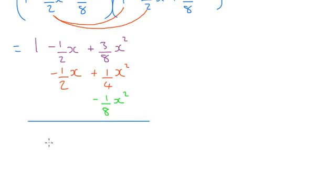1 minus a whole x. And then we've got 3 eighths plus 2 eighths take away an 8. So that's 4 eighths. That's positive 4 eighths, which is a half. So we've got 1 minus x plus a half x squared.